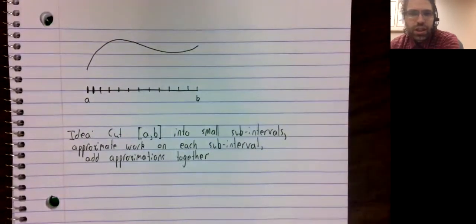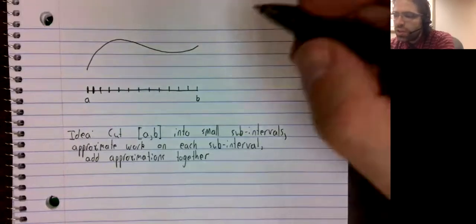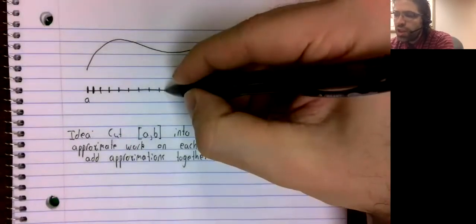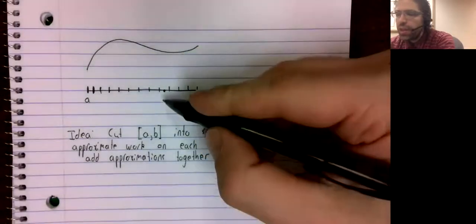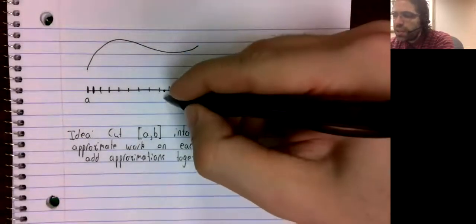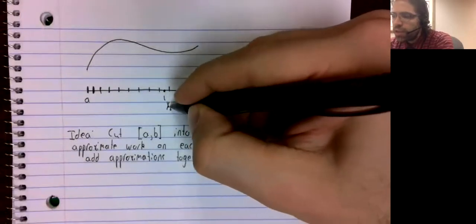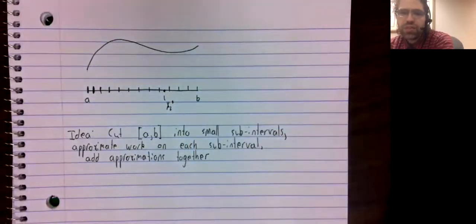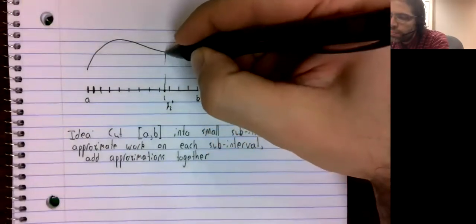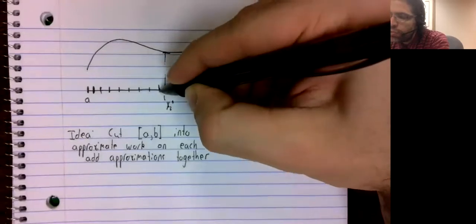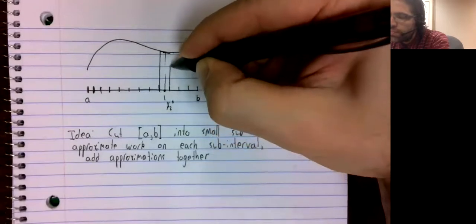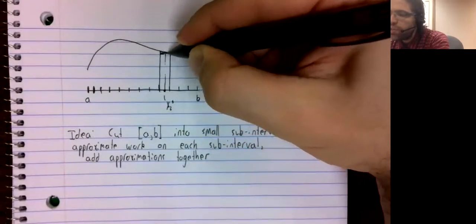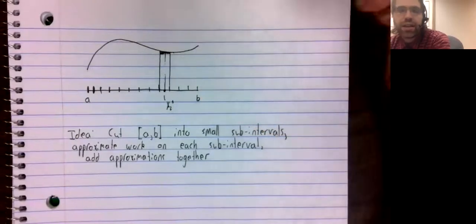And the idea is the same as that of a Riemann sum. Let's take one of these intervals, and let's take a point in the interval, call it x sub i star. And let's use that point to create a rectangle.